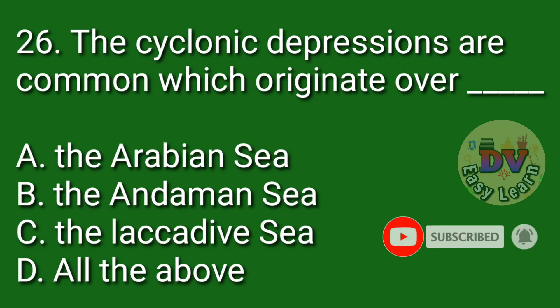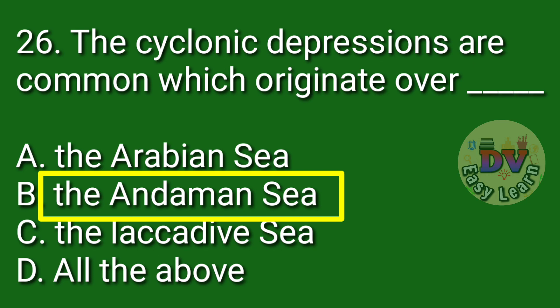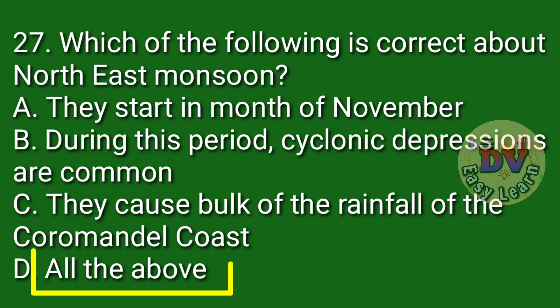Question number 26 and 27. Which of the following is correct about the north east monsoon? Correct answer: All the above — they start in the month of November, during this period cyclonic depressions are common, and they cause the bulk of the rainfall of the Coromandel coast.